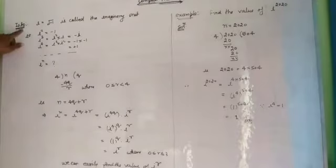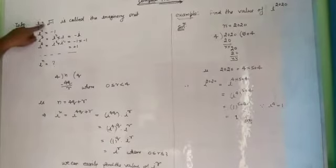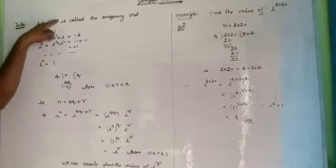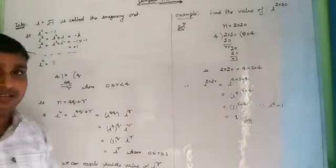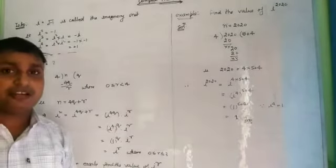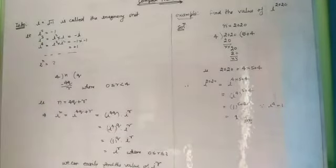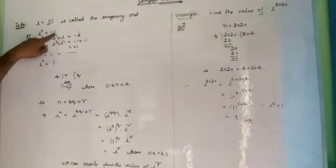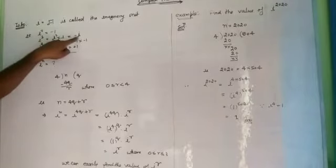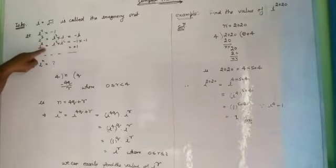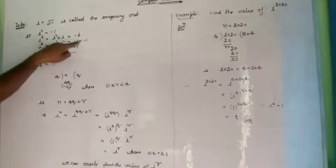Next, iota. Iota, represented by i, is defined as the square root of minus 1 and is called the imaginary unit. Now, i squared equals minus 1. i cubed equals i squared times i, that is minus i. i to the power 4 equals i squared times i squared, which equals minus 1 times minus 1, that is plus 1.